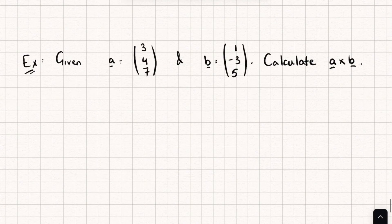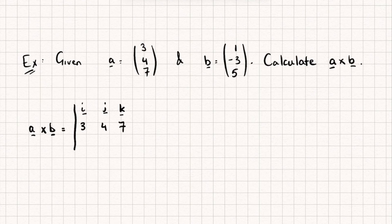So let's have a look at an example here. We've got two vectors a and b, and we need to calculate a cross b. So we know a cross b is equal to the determinant of the following matrix, so it's going to be i, j, and k, then 3, 4, 7, and 1, -3, 5.